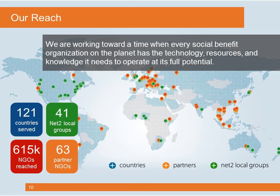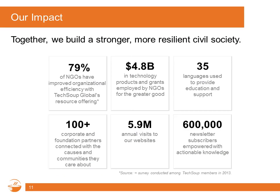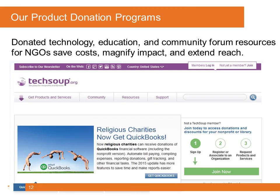We have served 615,000 NGOs to the tune of nearly $5 billion in technology products and grants to the greater good sector. You can learn more about our donation programs at TechSoup.org. And if you are joining us from a public library, you can also learn about our library-specific programming at TechSoupforLibraries.org.